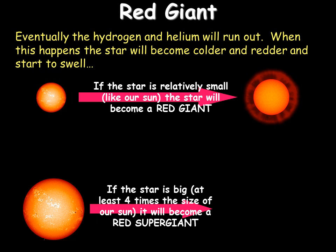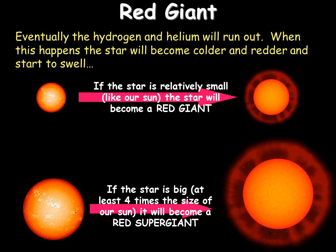However, if it's much, much bigger — about four times bigger than our Sun — it will turn into a red super giant. So small stars turn into red giants, and big stars turn into red super giants.